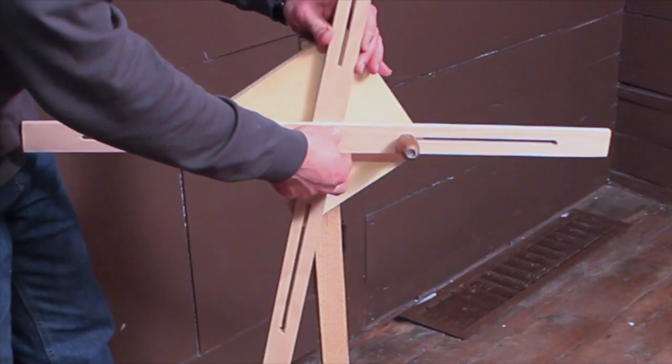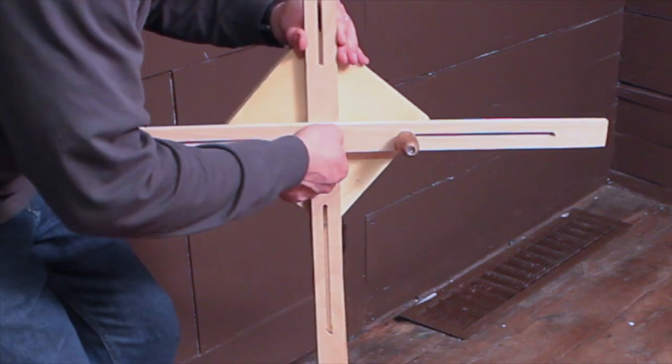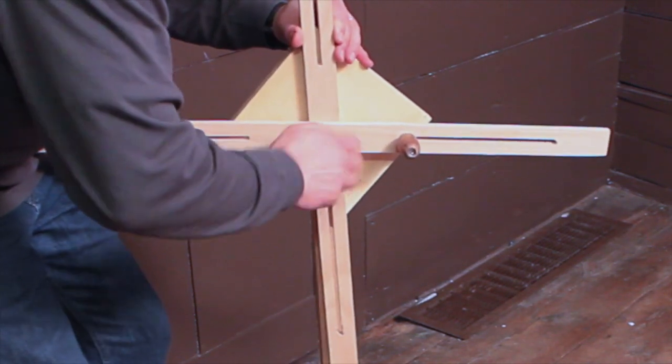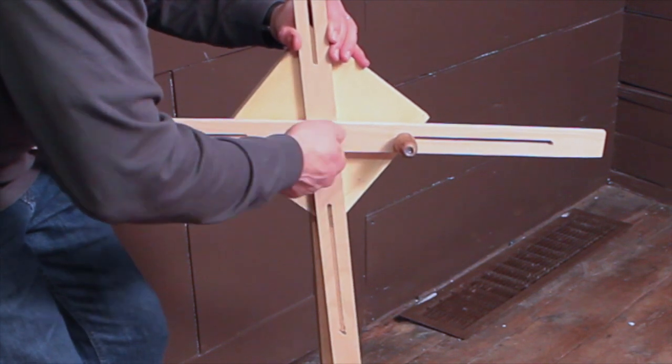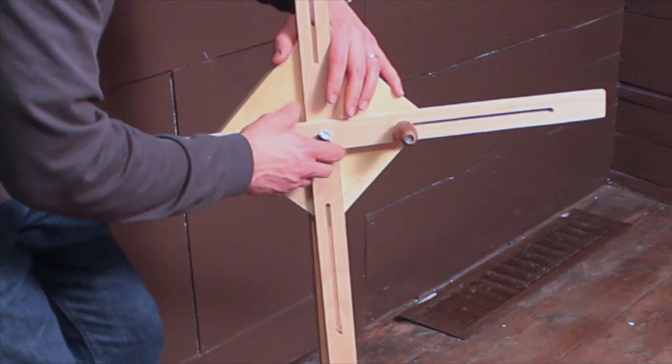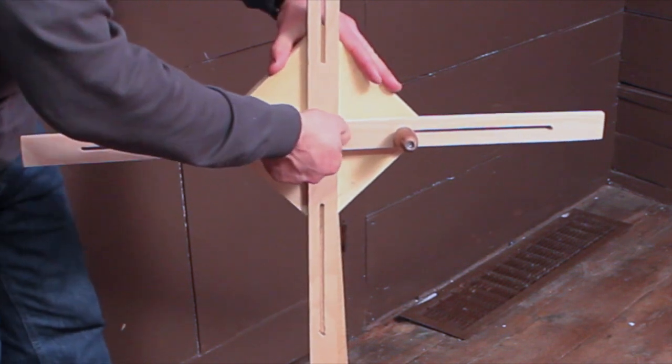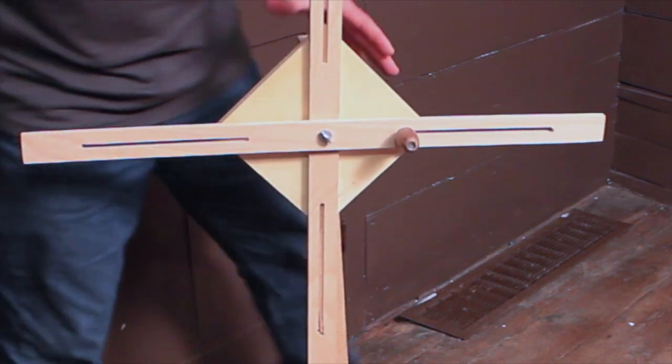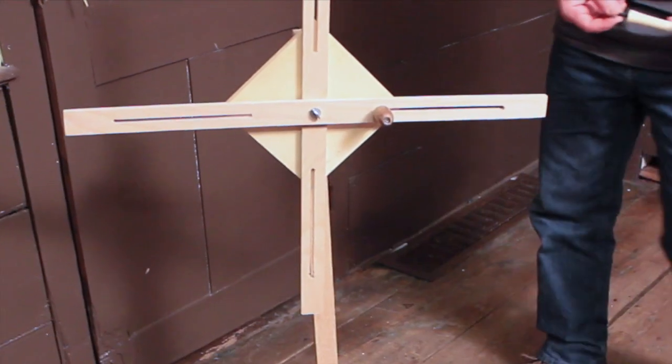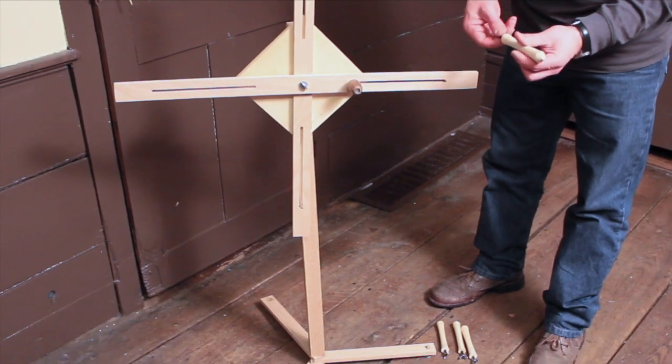The cross arms attach with a thumb screw into another threaded insert. The pegs that hold the yarn attach with hanger bolts to the slots that I cut in the arms with the drill press.